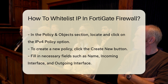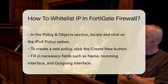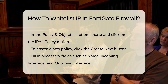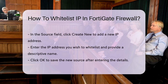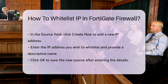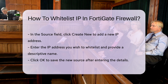The Source field is crucial for whitelisting. Click on the Source field and select Create New to add a new IP address. Enter the IP address you wish to whitelist and give it a descriptive name. After entering the details, click OK to save the new source.